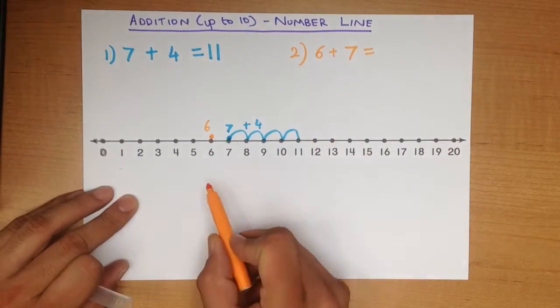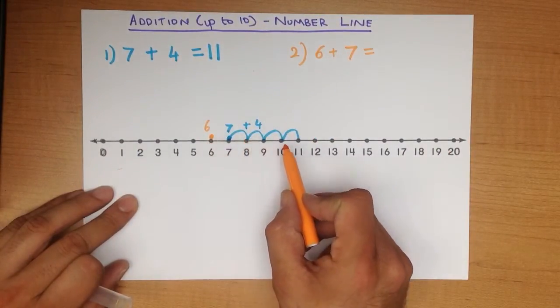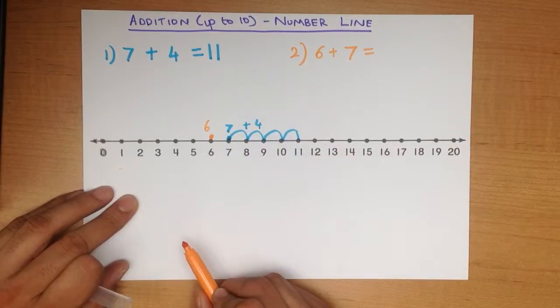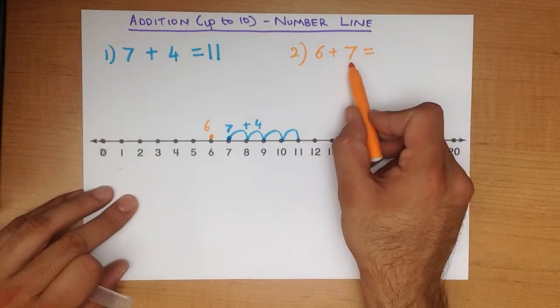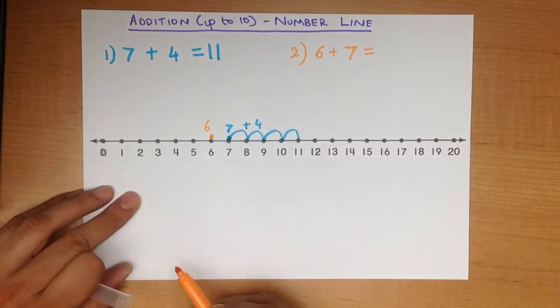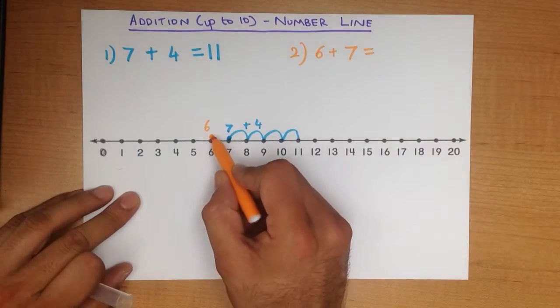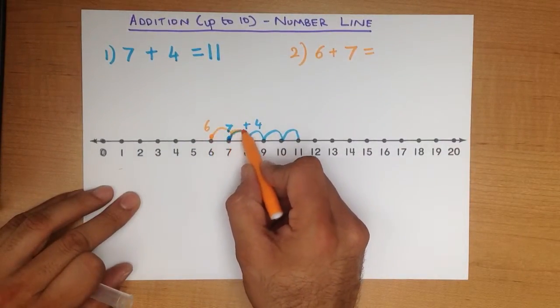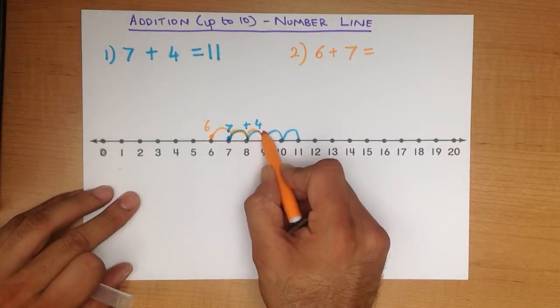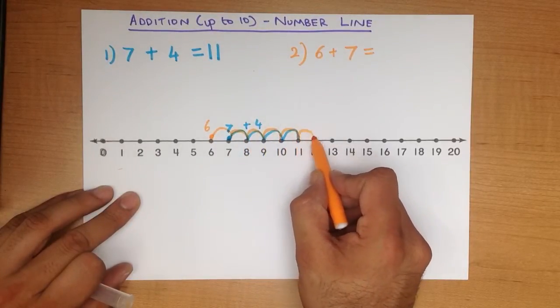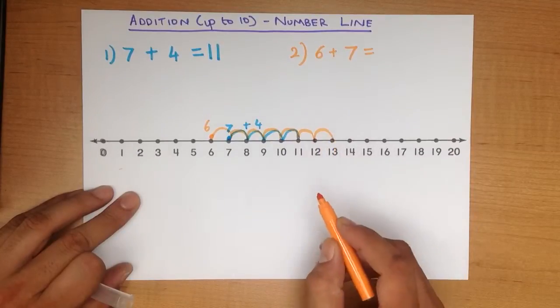We are adding, therefore we are jumping forward. How many jumps are we going to make? We are going to make 7 jumps. So, we start at 6: 1, 2, 3, 4, 5, 6, 7.